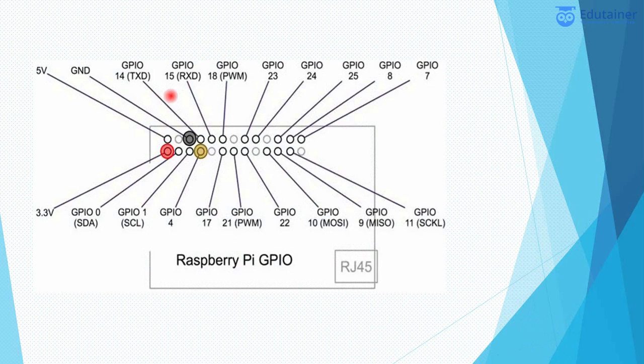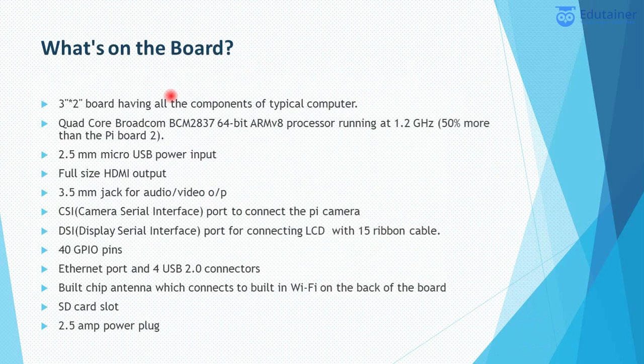This is the image about Raspberry Pi GPIO, which are input-output pins. On the board of Raspberry Pi, you can find various components like 2.5 mm micro USB power input, 3.5 mm jack for audio video, Ethernet port, built-in chip antenna, 2.5 amp power plug, and much more.